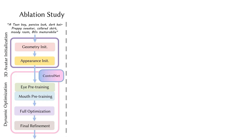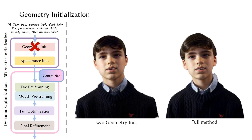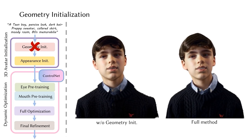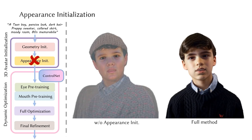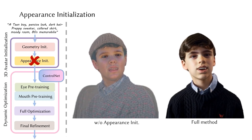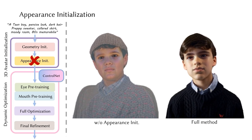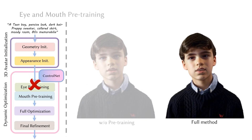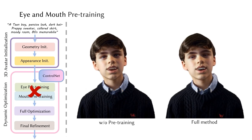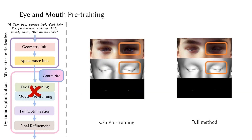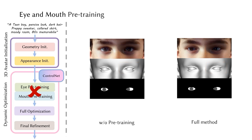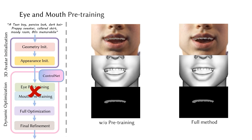We showcase ablation experiments by individually removing components from our full model. Without geometry initialization, avatars fail to capture complex and realistic human features, resulting in less natural outputs. Without appearance initialization, avatars exhibit unnatural color tones with ambiguous clothing lacking detail. Omitting pre-training affects robustness, realism, and alignment of the eye and mouth regions — visible holes appear on the eyelids, rigging of Gaussians on the eyeballs is inaccurate, and dark artifacts persist on the lips.